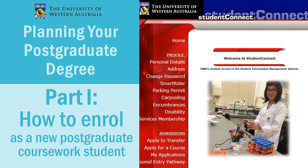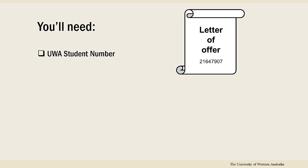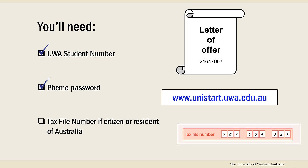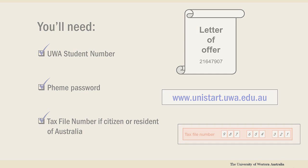We're going to lead you through the enrolment process, from checking the details we have about you, to enrolling in your units. To enrol, you'll need two things: your UWA student number, which is available on your letter of offer, and your FEMI password, which you can activate through the Unistart website. If you are a citizen or a resident of Australia, you'll also need your tax file number. It's best to have these things all handy when you enrol.